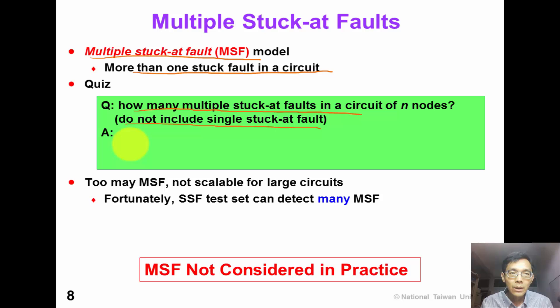Have you got it? This one is actually a little bit difficult. If we think about every node in the circuit, it can possibly have 3 states. Stuck-at 0, stuck-at 1, and don't forget we have a good state. So totally, in a circuit of n nodes, we can have 3 to the power of n different combinations. If we don't want to count single stuck-at fault, we should deduct it by 2n. And don't forget we have a good circuit. So we deduct it by 1.